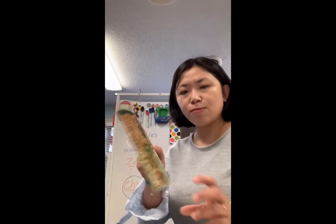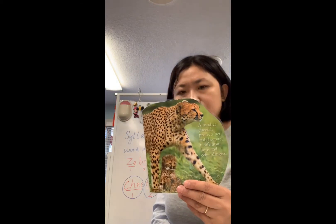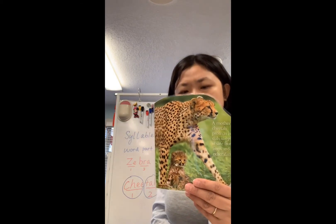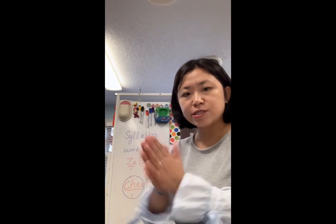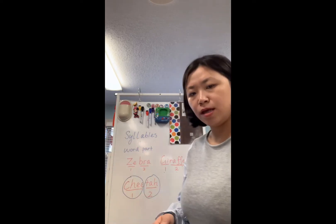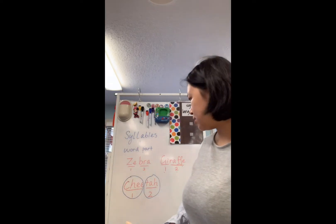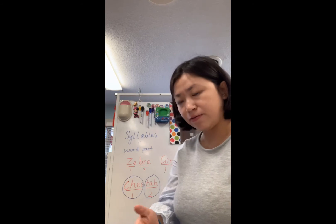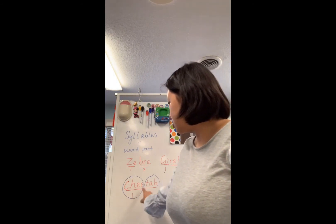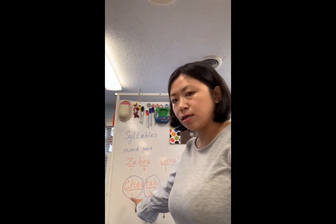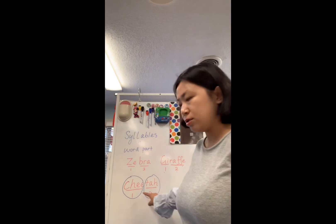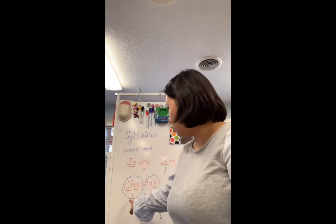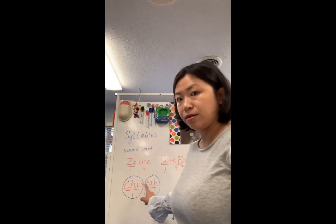The second one is a cheetah. Cheetah. Let's clap our hands. Chee-ta. Chee-ta. All right, let's see how many syllables do you think cheetah has. I think two. Chee-ta. Chee-ta. Two syllables in the word cheetah.